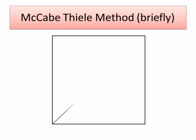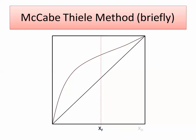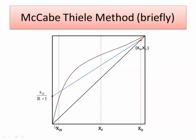The steps are as follows: you first draw the xy diagram, draw the 45-degree line, then draw the equilibrium curve, and put the compositions of the feed, top product, and bottom product — xd, xf, and xw. The top section line starts with the point (xd, xd) and ends with xd over (r+1) at x equals 0.